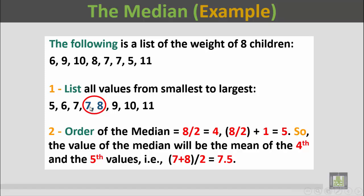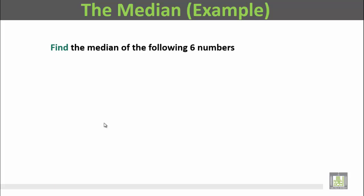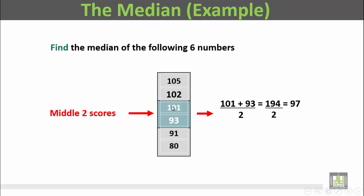Find the median of the following 6 numbers: 105, 102, 101, 93, 91, 80. We have 6 values. Since n equals 6, which is even, the order of the median will be n by 2, that's 6 by 2 equals 3, and the next one, 4, between the third and the fourth. The third value is 101 and the fourth value is 93. We add them: 101 plus 93 is 194, divided by 2 is 97. So the value of the median is 97.